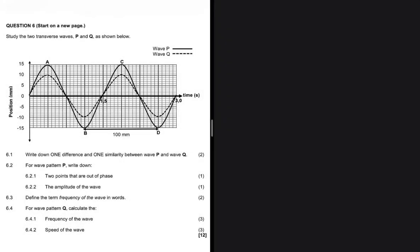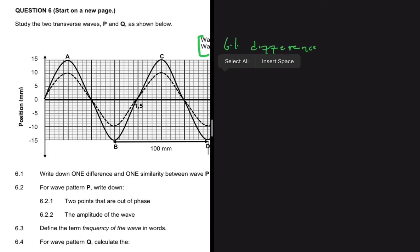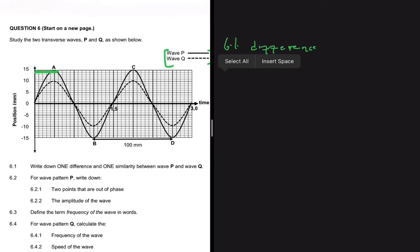Let's write down one difference and one similarity between wave P and wave Q. As you can see on the key, wave P is the solid line while wave Q is the dotted line. Let's look at the two lines and identify one difference and one similarity. Starting with the difference: wave P has an amplitude of 15 millimeters, while wave Q has an amplitude of 10 millimeters.